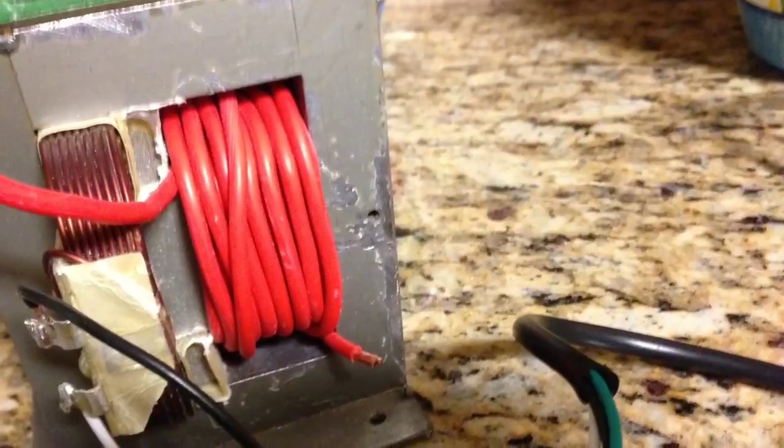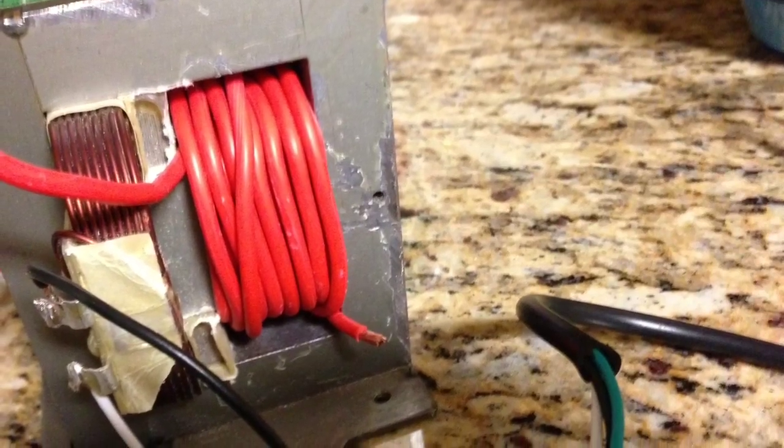Take the ground and connect that to the core of the transformer, add a new thicker secondary.